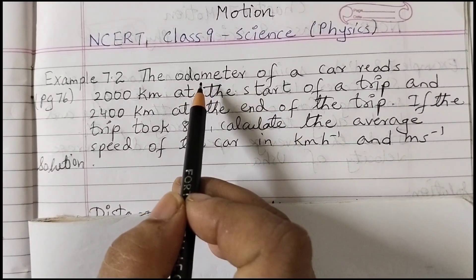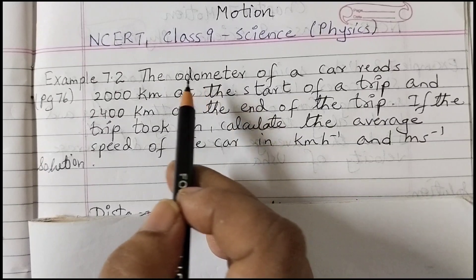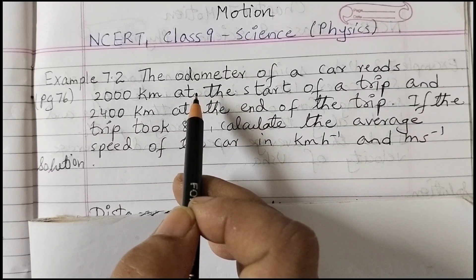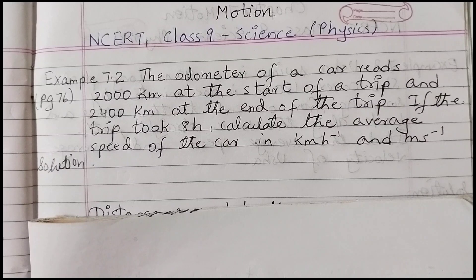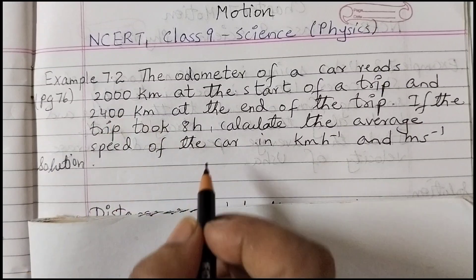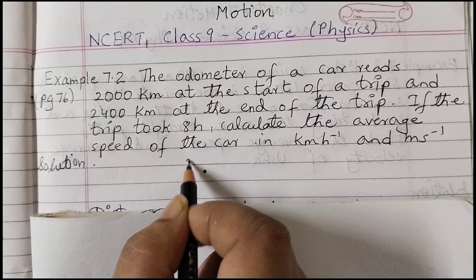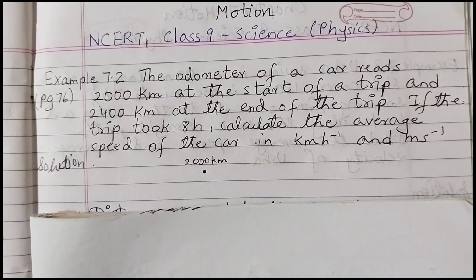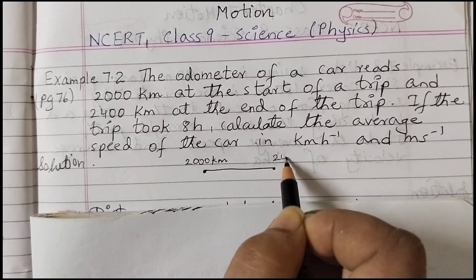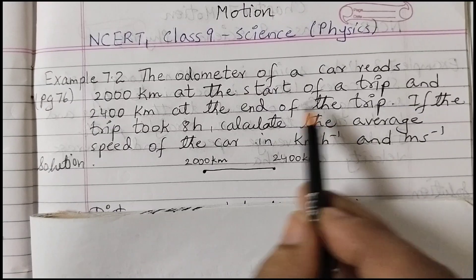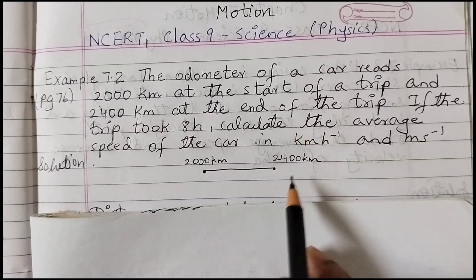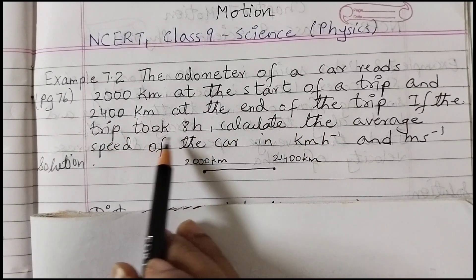What is an odometer? Automobiles like cars and four-wheelers are fitted with a device that shows the distance traveled — that is the odometer. At the start it's showing 2000 kilometers, and after some time it's showing 2400 kilometers. So: start of trip = 2000 km, end of trip = 2400 km.